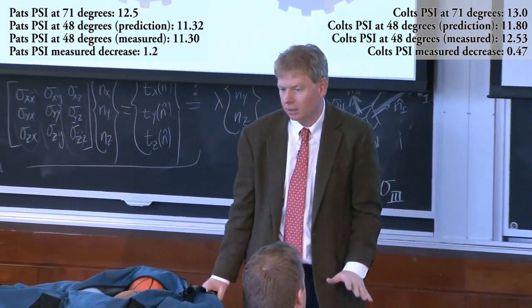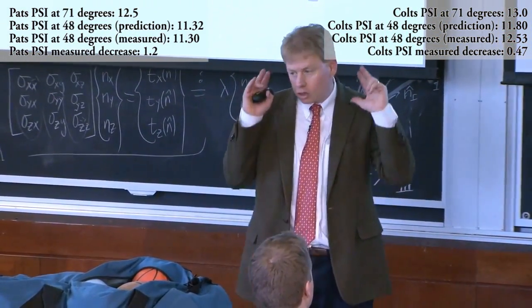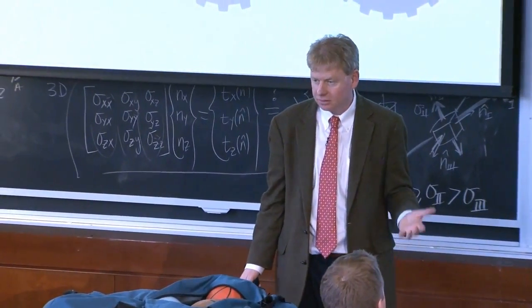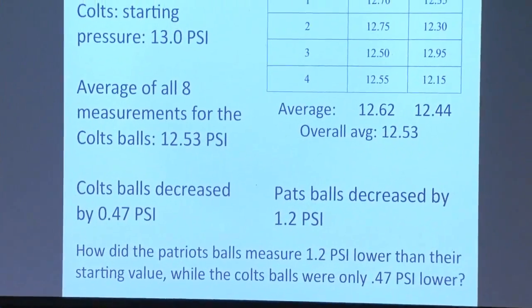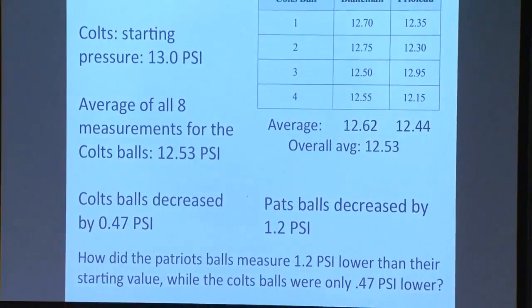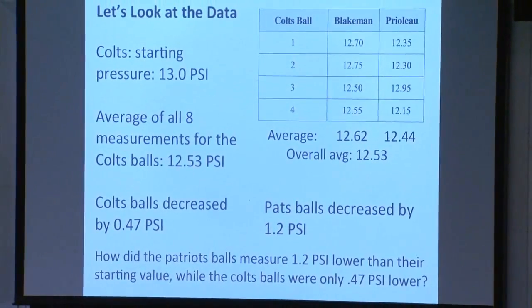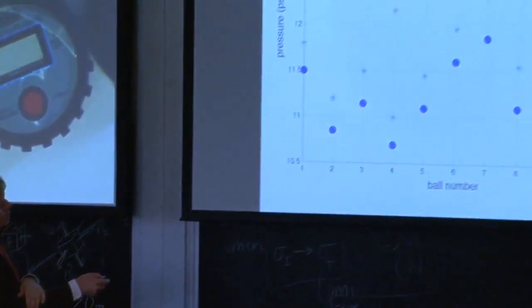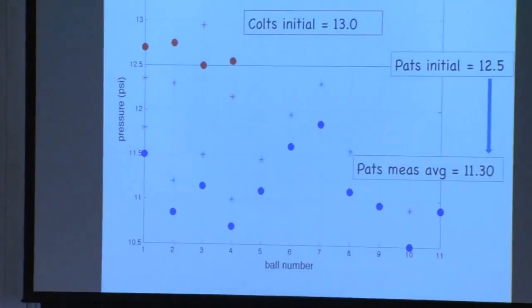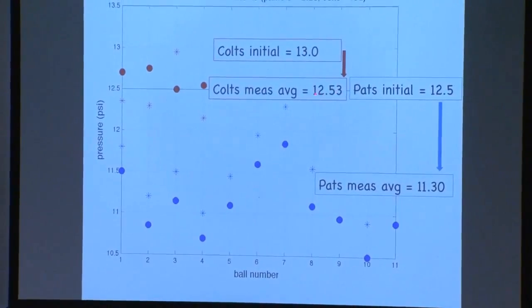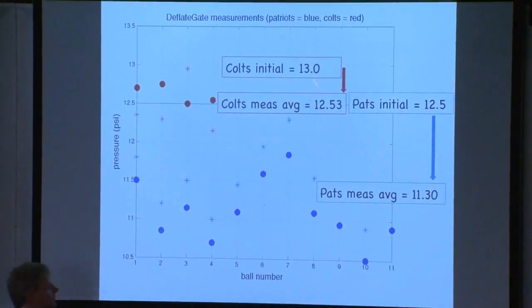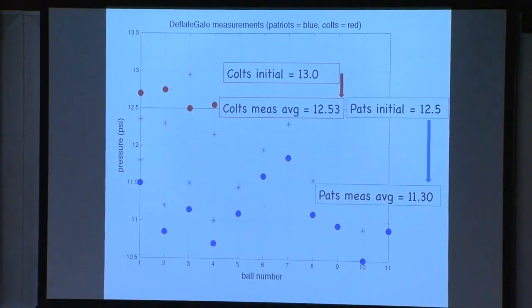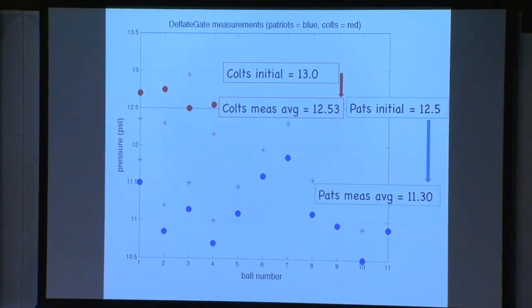Something's up. The Colts didn't tamper with their footballs. If the Colts are a control, something happened to the Patriots balls. Something's wrong. If you were the NFL and you didn't know any physics, would you be suspicious? The balls had to start at 12.5 for the Patriots and fell to 11.3. The Colts started at 13 and fell to 12.5. It's this difference of differences that is the incriminating thing against the Patriots.